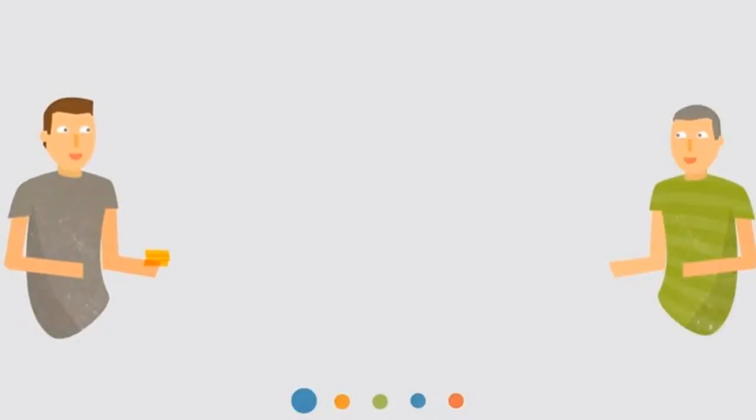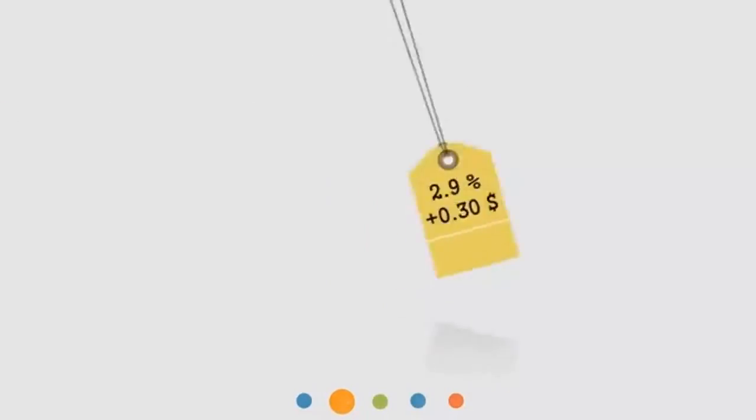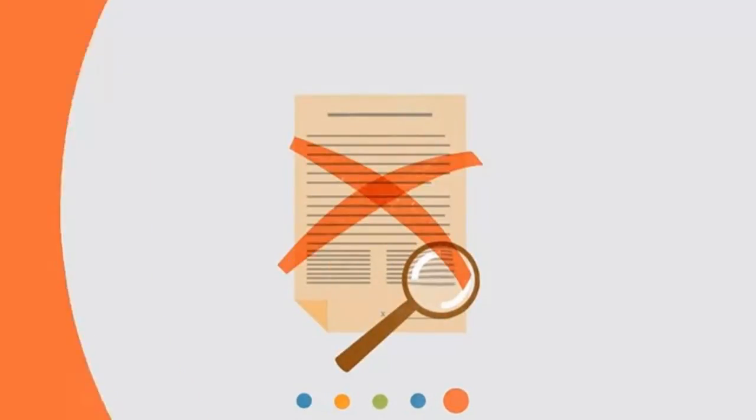Bitcoins are transferred directly from person to person via the net, without going through a bank or clearinghouse. This means that the fees are much lower. You can use them in every country, your account cannot be frozen, and there are no prerequisites or arbitrary limits.